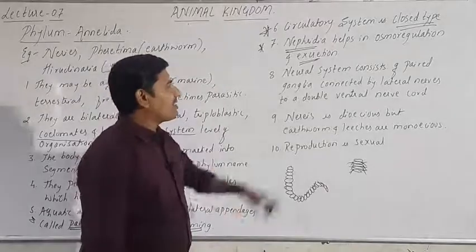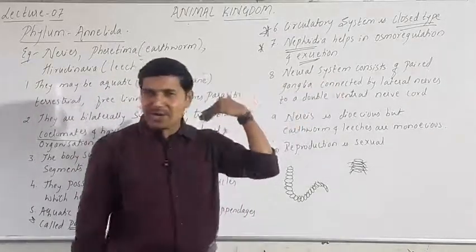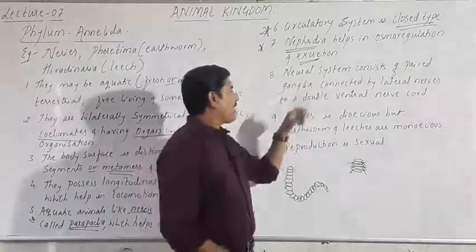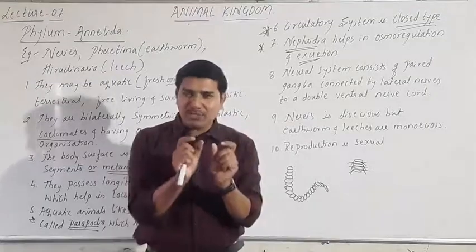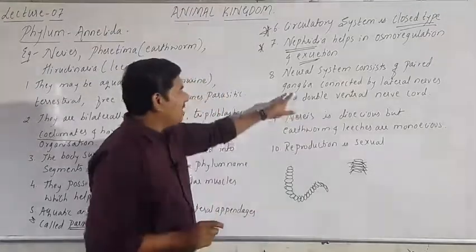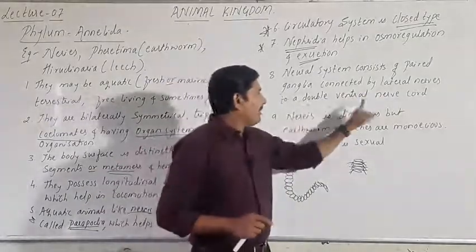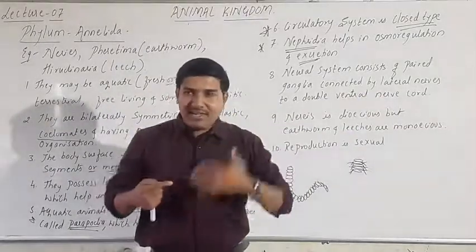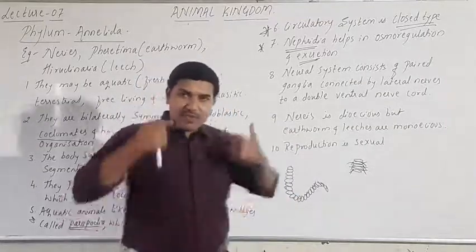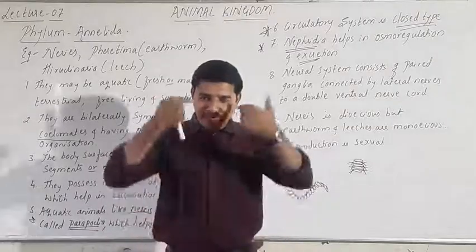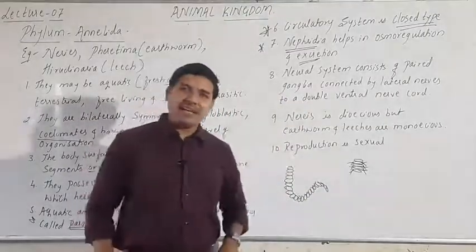The neural system consists of paired ganglia — groups of nerve cells — connected by lateral nerves to a double ventral nerve cord. On the ventral side, there are two nerve threads, so the nervous system is connected and well-developed.